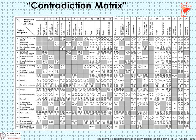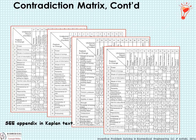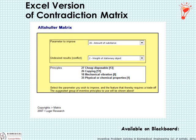The contradiction matrix is rather extensive — it is a 40 by 40 matrix — and it's provided in two forms: as a PDF in the back of Kaplan's book, and as an Excel version that is semi-automated, in which you insert the parameter to improve and the undesired result, and it gives you the corresponding inventive principles. Both are available in the reference section on Blackboard.